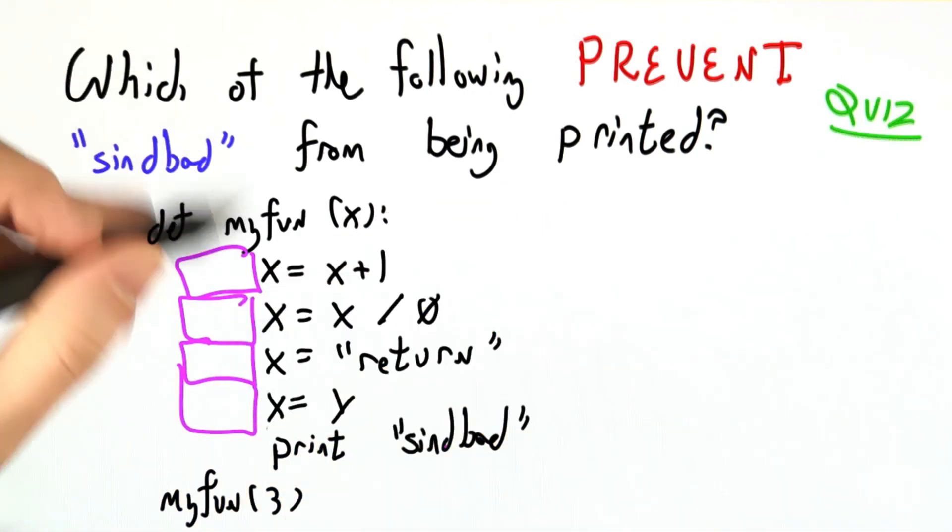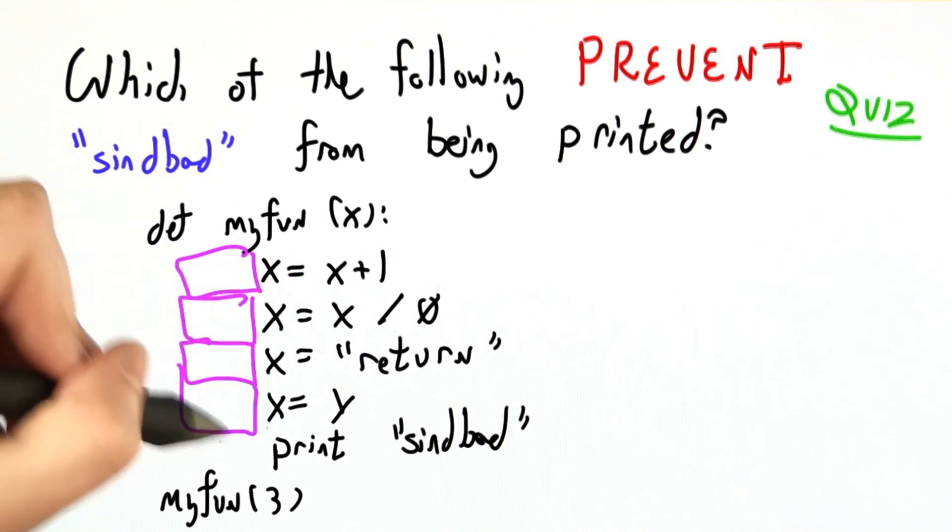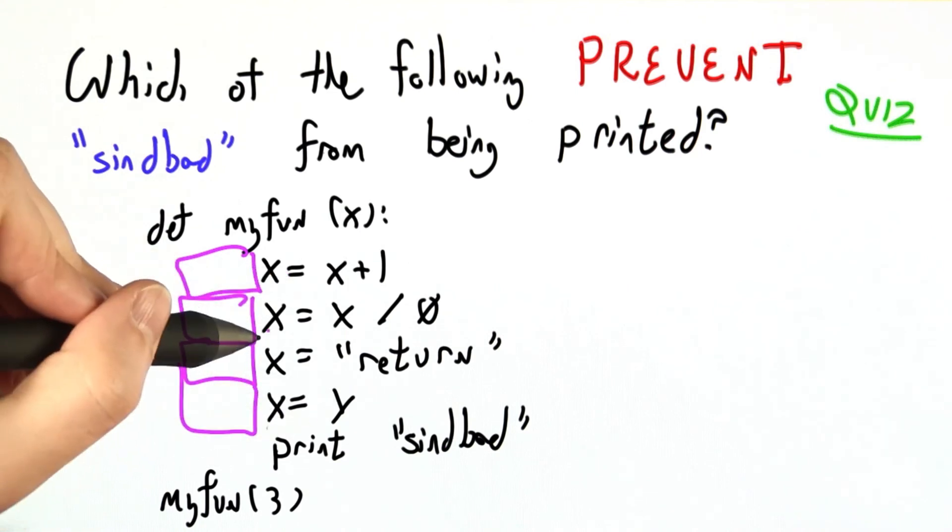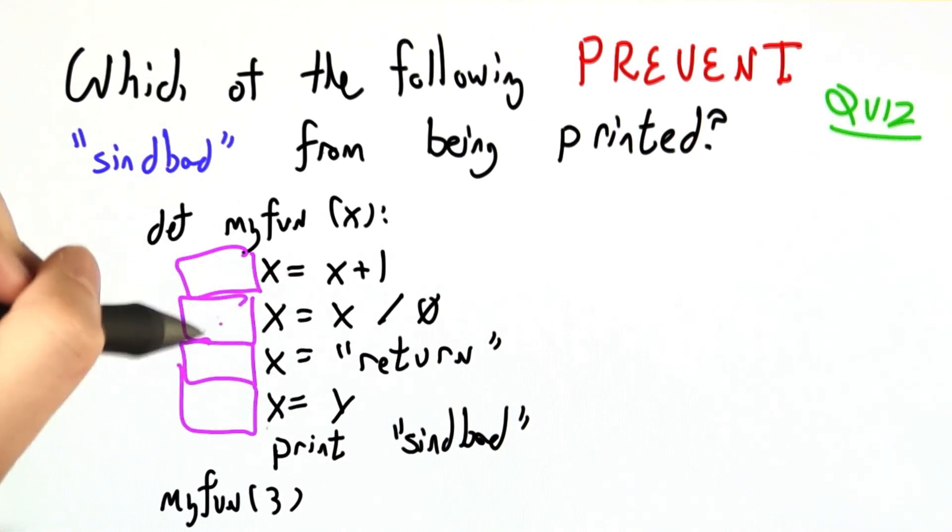So again, assume these statements aren't there, but which ones could you move in to prevent Sinbad from being printed? Multiple choice, check all that apply.